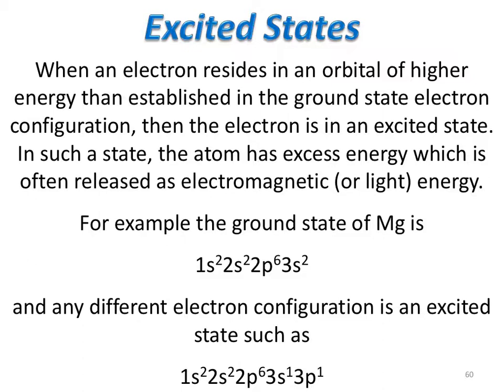How can you determine if you have an excited state? One of the best ways is to look at everything except the last subshell or orbital. If all of those are filled and the next orbital is appropriately filled, it is probably in the ground state. However, if one of the lower subshells has a different number than expected — for example, a p subshell with only 5 electrons — or if the next set of orbitals don't look correct according to our ordering, that would indicate an excited state.